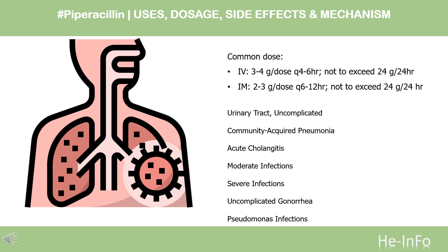Dose — Usual dosage range (IV): 4–5 g/dose every 4–6 hours, not to exceed 24 g/24 hours.